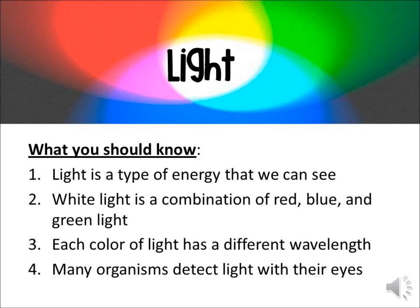Light is a type of energy, just the same way that sound is a type of energy. There's potential energy, there's kinetic energy — this is just another form. What you should know by the time you finish this is that light is a type of energy that we can see. White light is a combination of red, blue, and green light. Each color of light has a different wavelength, and many organisms detect light with their eyes.